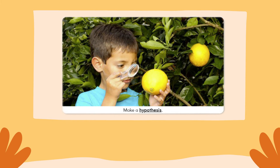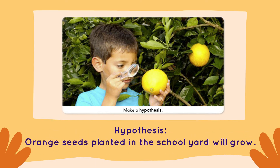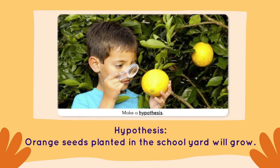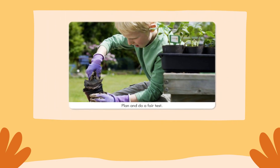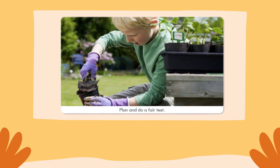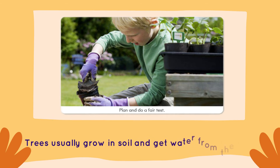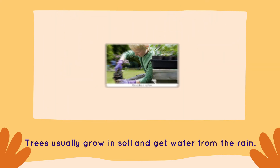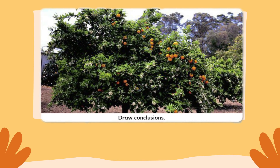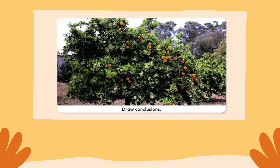He knows that orange trees grow in a garden near their school, so he makes a hypothesis and shares it with the group: orange seeds planted in their school yard will grow. John's friend Lucas often helps his mom in their garden. He says trees usually grow in soil and get water from the rain, so the children make a plan to put the seed in soil and water it.